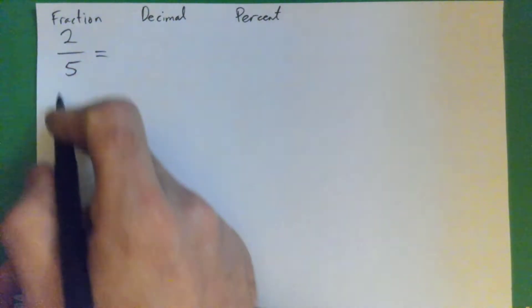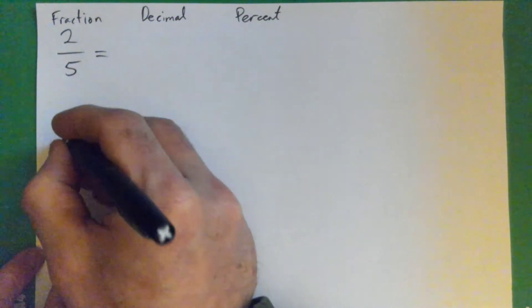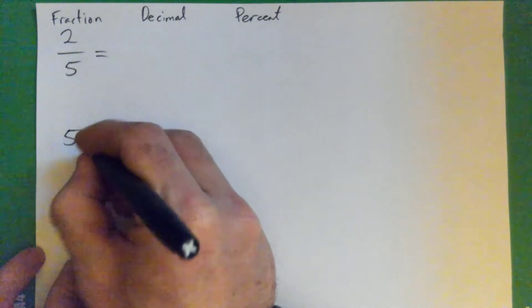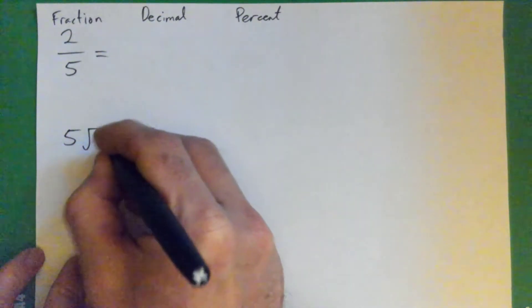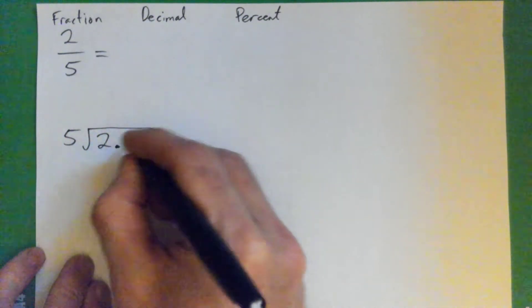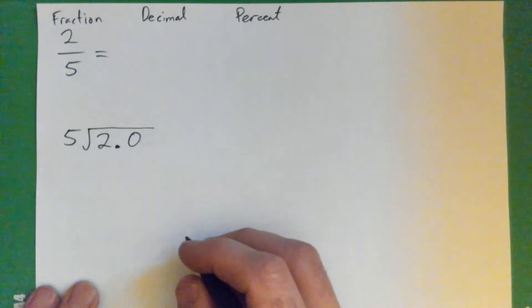To get it to decimal form, we can divide. Just for fun, we'll just do some long division here. Five, it's five into two, or two point zero.